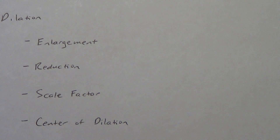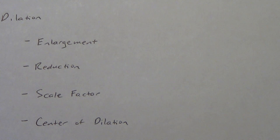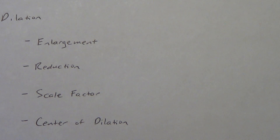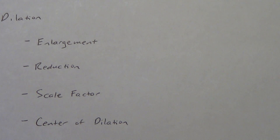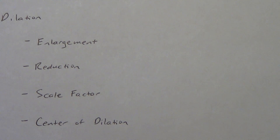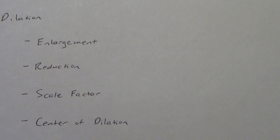By the way, this is going to be two different videos for Lesson 6. In the first video, I'm just going to walk through these terms and do one example. In the second video, I'm going to talk about a shortcut for that example, and then we're going to do a couple other examples. The last example, the fourth one, is going to be slightly harder because the center of dilation is going to be in an unusual spot. So make sure you watch both videos.